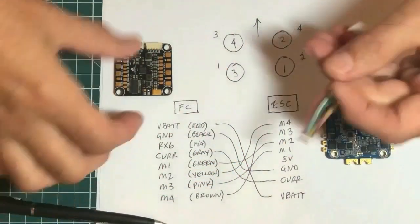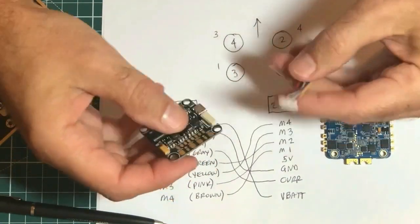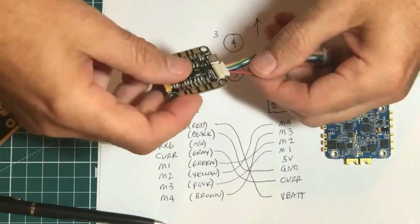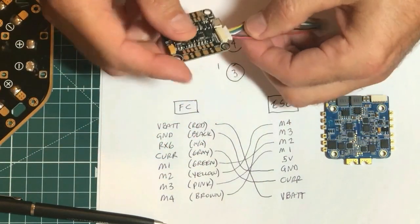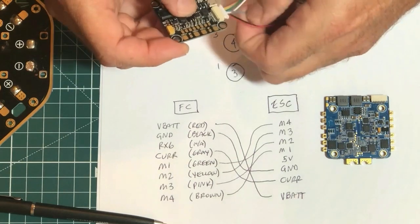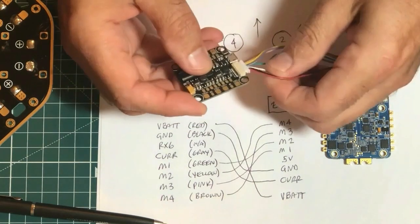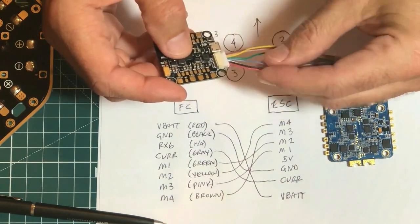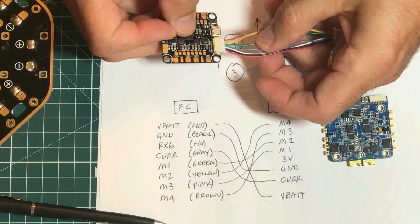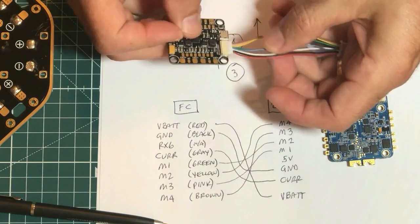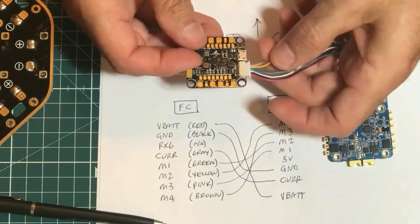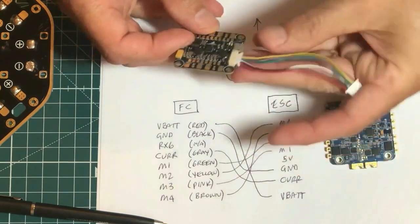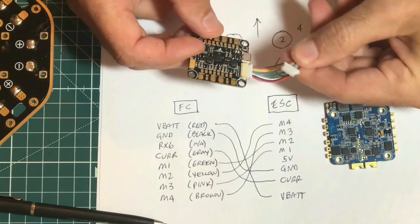So on the flight controller, this connector is for the flight controller, so it's already been set up appropriately. Red is VBAT, black is ground, white is RX-6 which we're not going to use. This gray could be like a violet - it is the current sensor. Green is motor one, yellow is motor two, pink is motor three, and brown is motor four. So I'm going to reposition those colors and those wires into this connector appropriately.